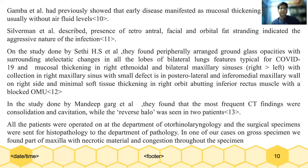Gambai et al. previously showed that early disease manifested as mucosal thickening on CT scan, usually without air-fluid level. Silverman also described the presence of retroantral facial and orbital fat stranding, indicating the aggressive nature of the infection. A study done by Sethi et al. found peripherally arranged ground-glass opacities with surrounding atelectatic changes in all the lobes of bilateral lungs, typical for COVID-19 infection, with thickening in right ethmoidal and bilateral maxillary air sinuses, with a collection in the right maxillary sinus and a small defect in the posterolateral inferomedial maxillary wall on the right side, and minimal soft tissue thickening in the right orbit abutting the inferior rectus muscle.